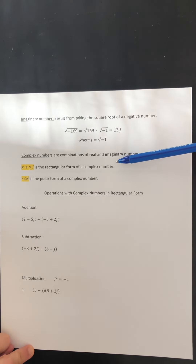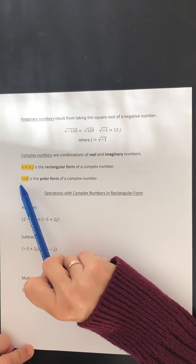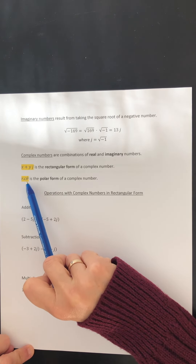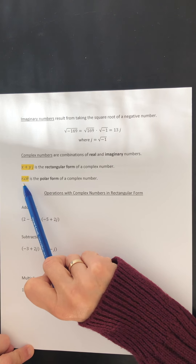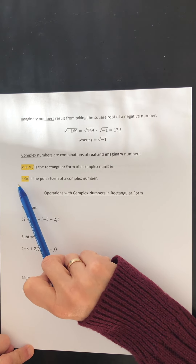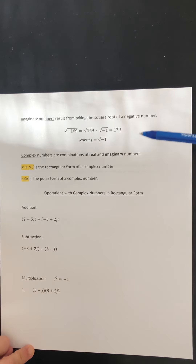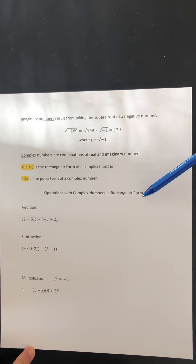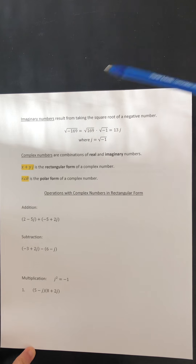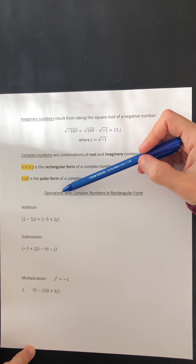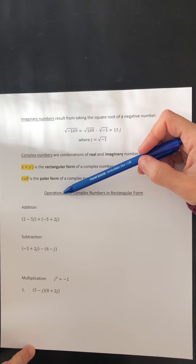There is a second form of every complex number called its polar form, and we will focus on that in our next lesson. For today's lesson, I want to look at performing operations with complex numbers in rectangular form. When we talk about operations in mathematics, we mean adding, subtracting, multiplying, and dividing.